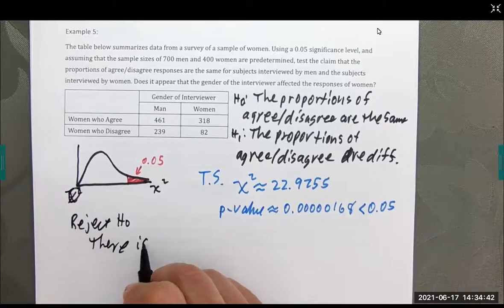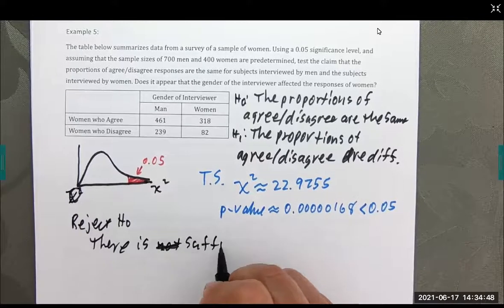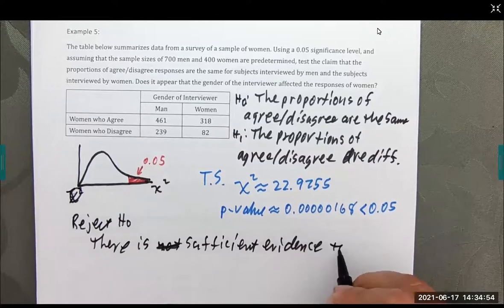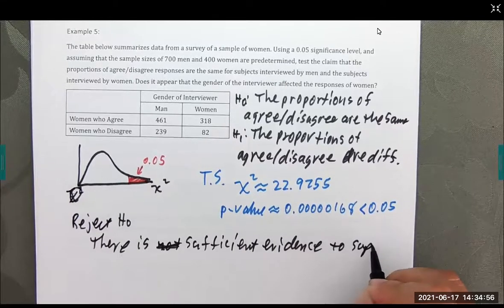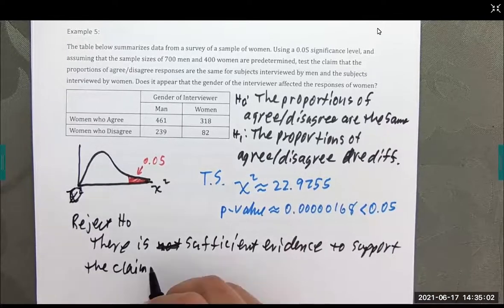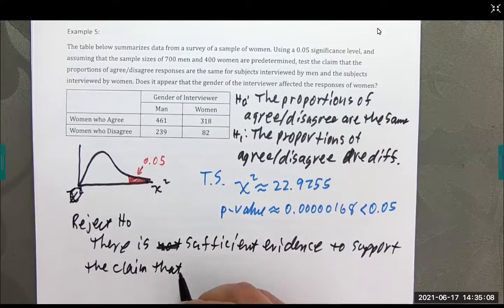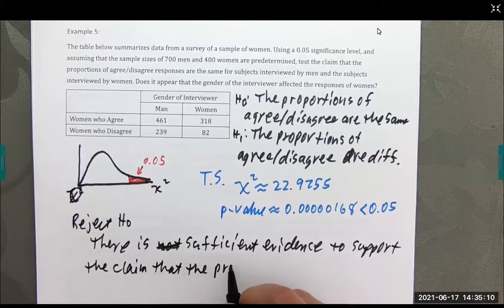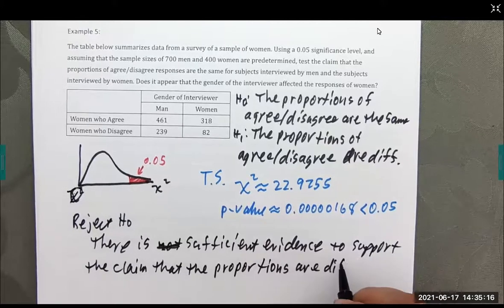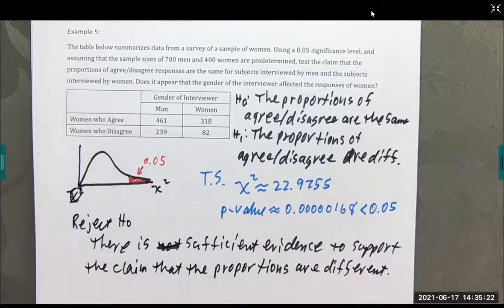There is, pardon me, there is sufficient evidence that the proportions are different. Not too bad. Pretty easy with the calculator, I'd say.